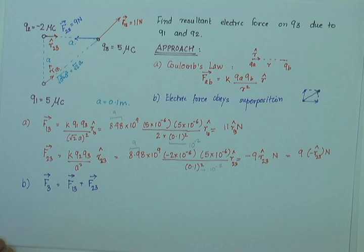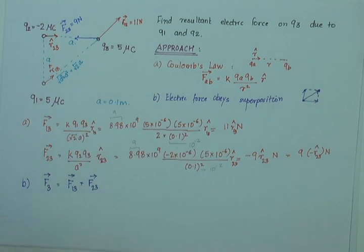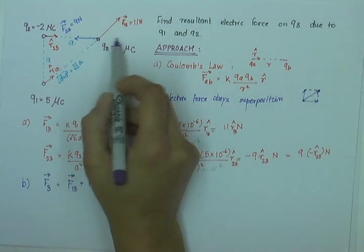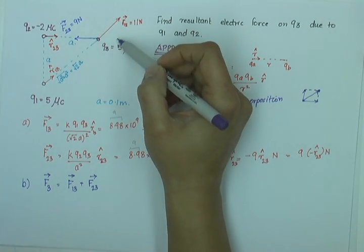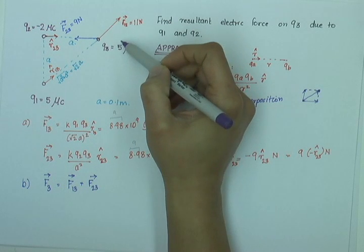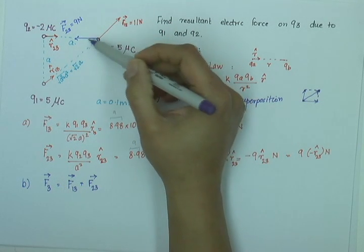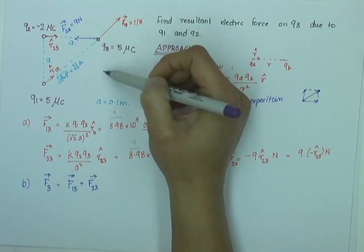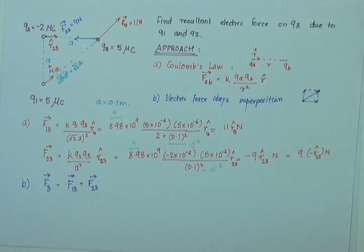But let me do it algebraically here. What I will do is basically resolve the vectors so that I can add them up easily. This vector is along horizontal and if I resolve F13 along a direction parallel and perpendicular to this, then I can add the parallel vectors and I know what my perpendicular vector is.